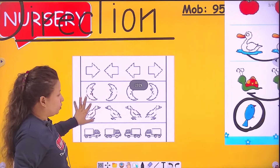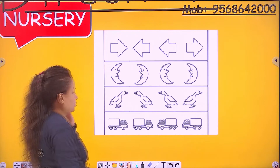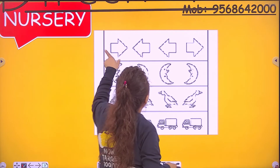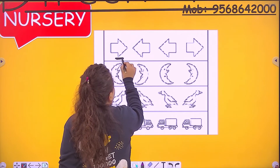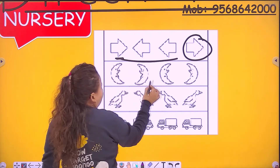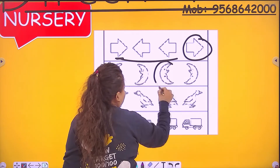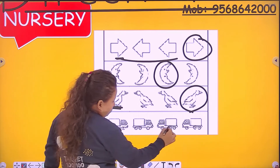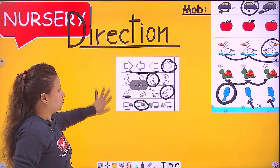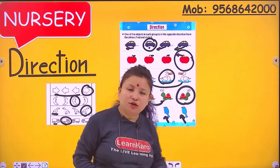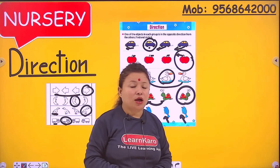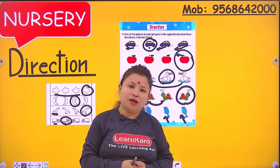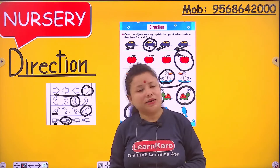Now we have one more activity related to direction — matching direction. These are arrows, so humein isse match karna hai. This one is right, this one is right — match the arrows accordingly. Now complete page number 18 of your playful activities book. I hope you enjoyed today and learned something new. It's time to go now; we'll come back very soon. Take care, goodbye, and have a nice day!